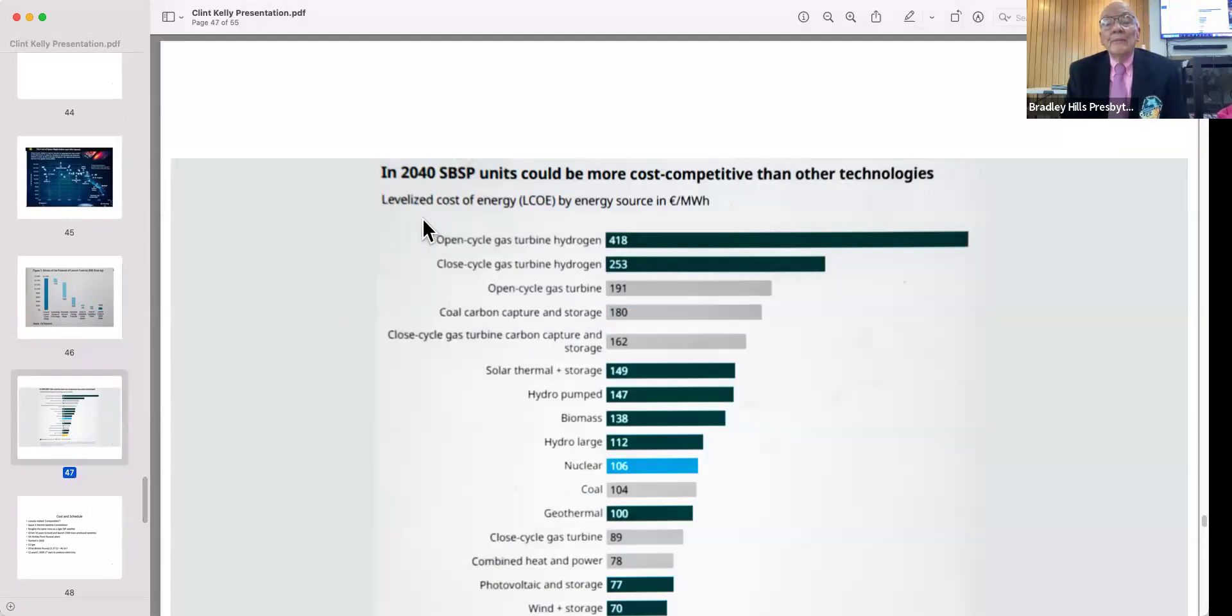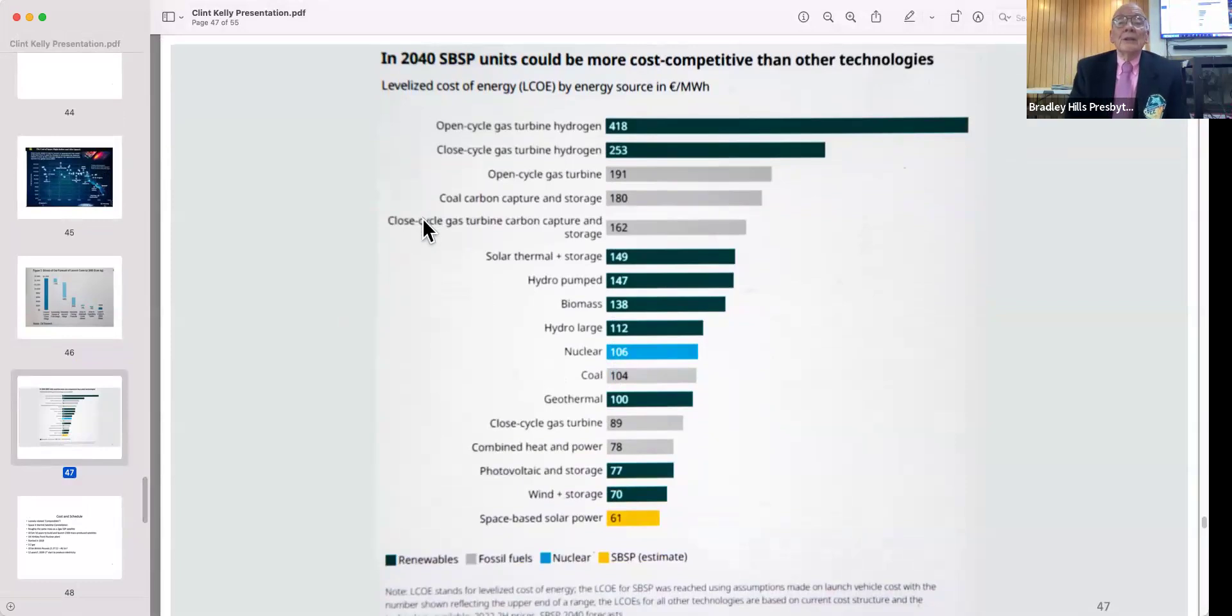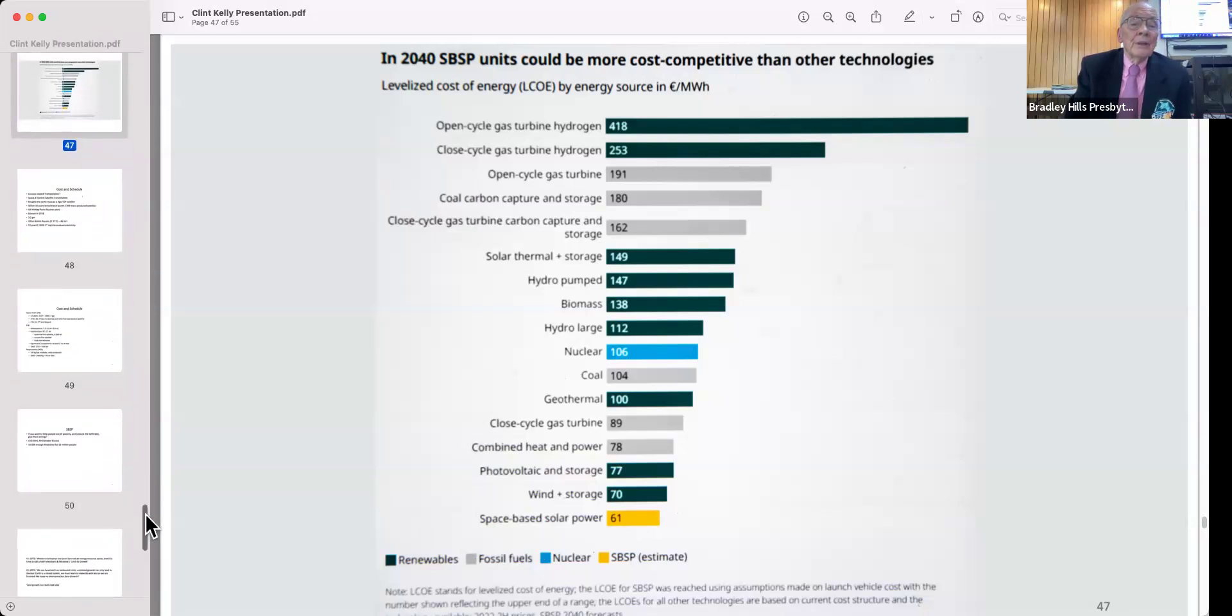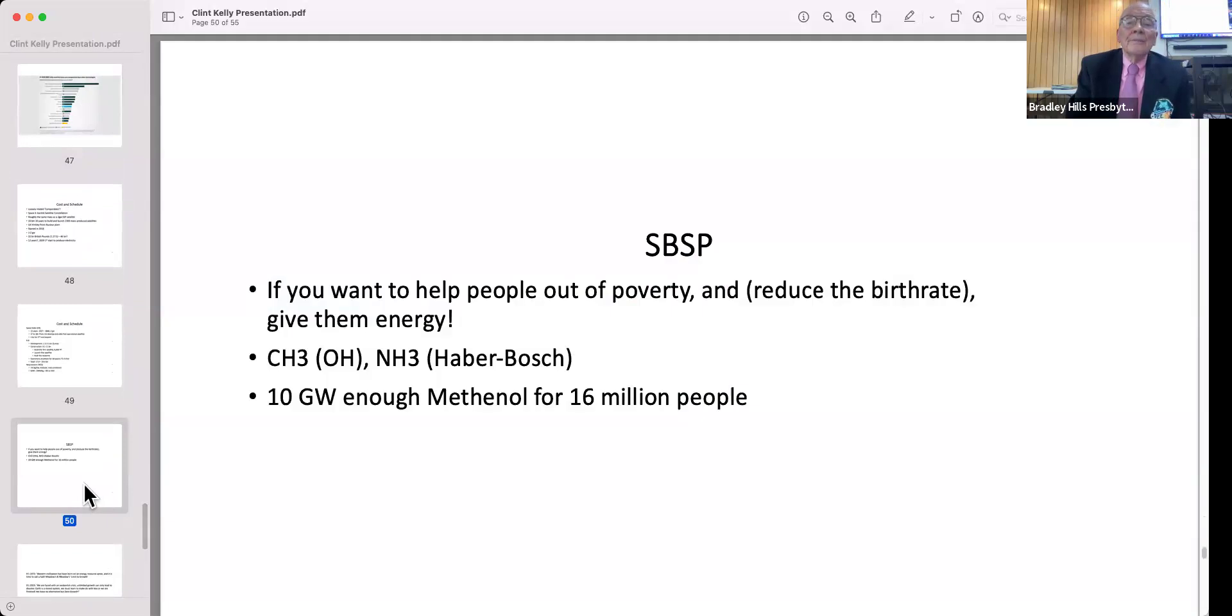This is from a startup called Virtus Solis (V-I-R-T-U-S), claiming to put up a small satellite to do feasibility demonstration in 2027. They claim that solar-based power is going to be very competitive. We'll see. It's compelling enough—if you just don't do any better than break even, you'll be in pretty good shape. Bottom line is if you want to help people out of poverty, if you want to reduce the birth rate, you give them energy.